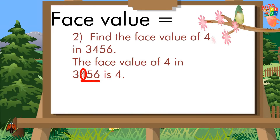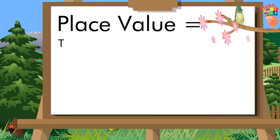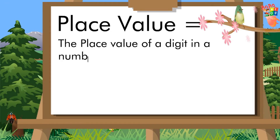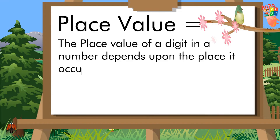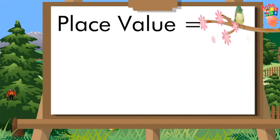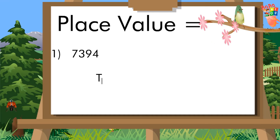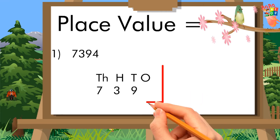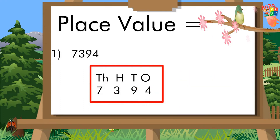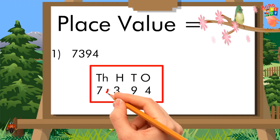The next concept is place value. The place value of a digit in a number depends upon the place it occupies in the number. Example: 7394. Write this in the place value chart — thousands, hundreds, tens, and ones: 7, 3, 9, 4.